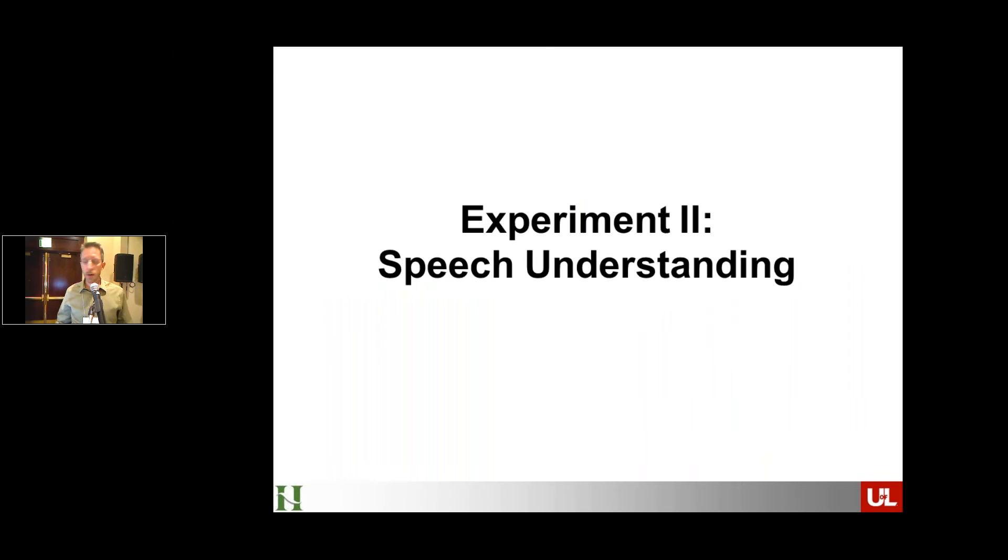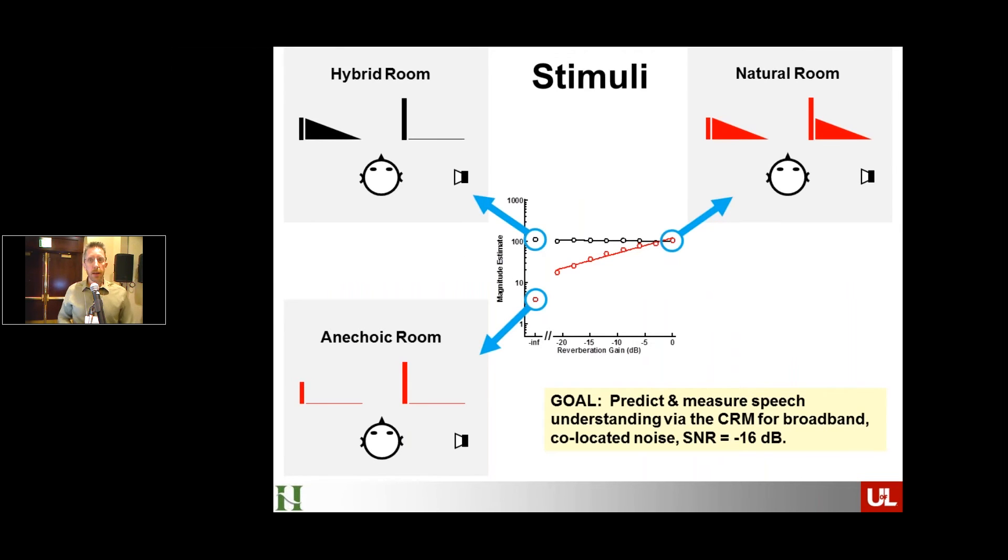Okay, so that's experiment one. Now I want to tell you about the second part of this, the speech understanding part. And basically what we did here is set up an experimental situation where we took a subset of the stimuli from that first experiment. So basically we want to look at the extreme cases here. So we can look at our natural room. We can look at the extreme case of the hybrid room where there is no reverberant energy going to the same side ear. And we can look at our anechoic room where there simply is no reverberant energy. And what we're going to do is now try and predict and measure speech intelligibility in those three cases.